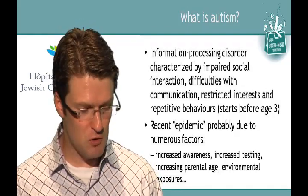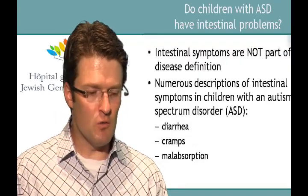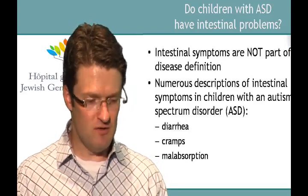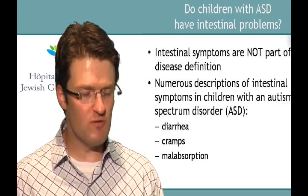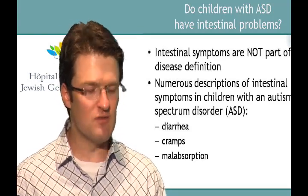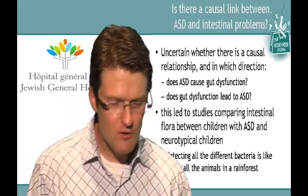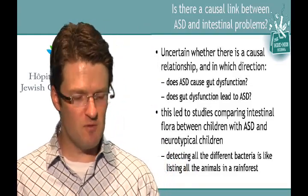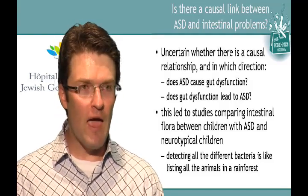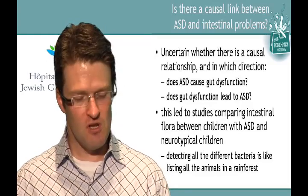This increase is probably due to a bunch of different factors: increased awareness, more testing than ever before, and the fact that as parents are on average getting older before having children, older parents seem more prone to having children on the autism spectrum. There may also be a role for some environmental exposures. Do children with ASD have intestinal problems? Intestinal symptoms are not part of the official disease definition for autism, however numerous studies show that children with autism spectrum disorder do have intestinal symptoms — usually diarrhea, cramps, and sometimes malabsorption.